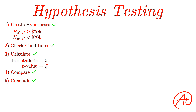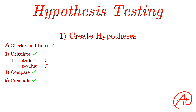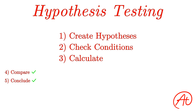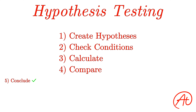So that's the very high-level explanation of hypothesis testing. I know this concept can be very confusing, so I'd encourage you to rewind and take a look at the parts you're struggling with to get the overall idea and process down. If you learn one thing from this video, remember the five C's: first, create your null and alternative hypotheses; then check your conditions to see if you can do the test; next, calculate your test statistic and p-value; then compare your test statistic and critical value, or p-value and alpha value; and finally conclude based on your results.